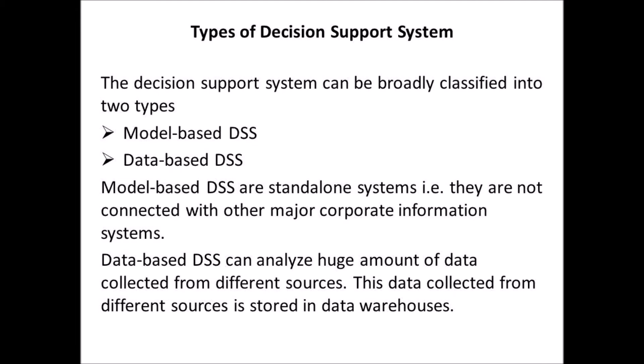The decision support system can be broadly classified into two types. First, model-based decision support system. Second, data-based decision support system. Model-based decision support systems are standalone systems; that is, they are not connected with other major corporate information systems. Data-based decision support systems can analyze huge amounts of data collected from different sources. This data collected from different sources is stored in data warehouses.